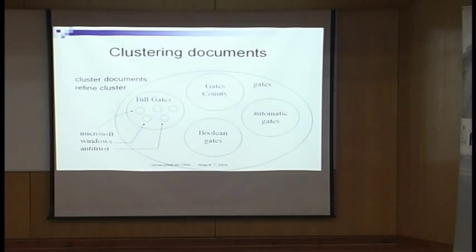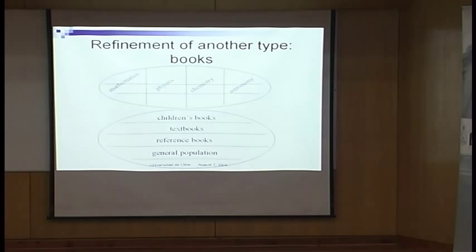What you clearly want to do is cluster results and then sub-cluster them so you can immediately jump into the relevant cluster. But clustering is not obvious — how do you measure distance between entities? You might want to cluster books by subject: math, physics, chemistry, astronomy. Or you might classify them by level: children's books, textbooks, reference books, or books for the general population. There are many different ways of clustering, and understanding how to detect clusters, measure distances, and things of this type is what we need to understand.